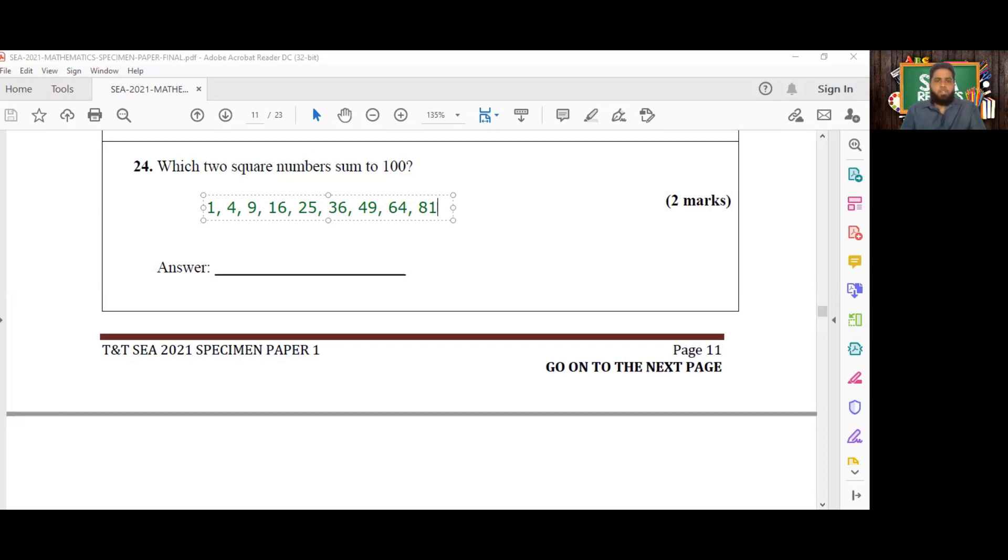Now 10 squared is 100, so we can't include 100 since zero is not a square number. Two numbers need to be added together to get 100. So by observing these and testing them out, you would realize that the two numbers that sum together to make 100 are 36 and 64.